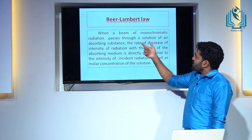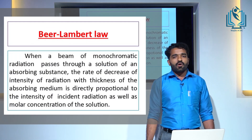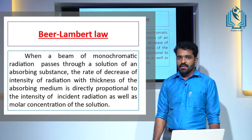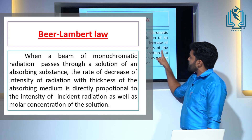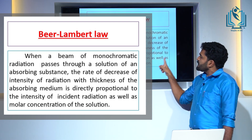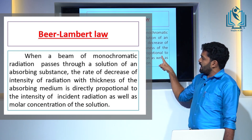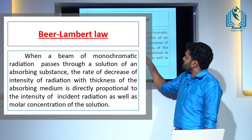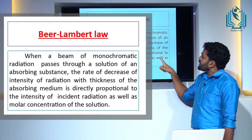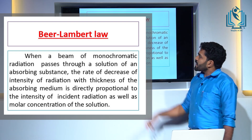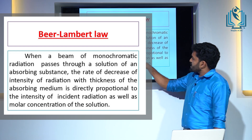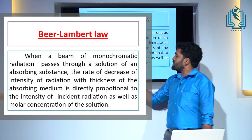Beer-Lambert Law is a combination of Beer's Law and Lambert's Law. It states that when a beam of monochromatic radiation passes through a solution of an absorbing substance, the rate of decrease of intensity of radiation with the thickness of the absorbing medium is directly proportional to the intensity of incident radiation as well as the molar concentration of the solution.